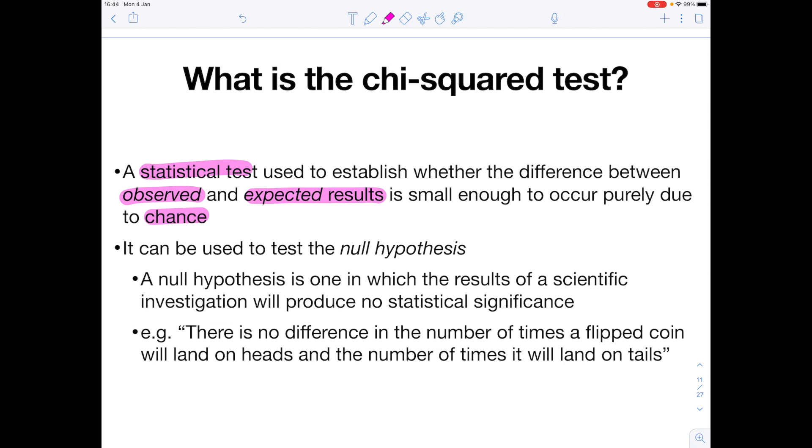So it can be used to test what's known as the null hypothesis. A null hypothesis is one in which the results of a scientific investigation will produce no statistical significance. For example, there is no difference in the number of times a flipped coin will land on heads and the number of times it will land on tails.